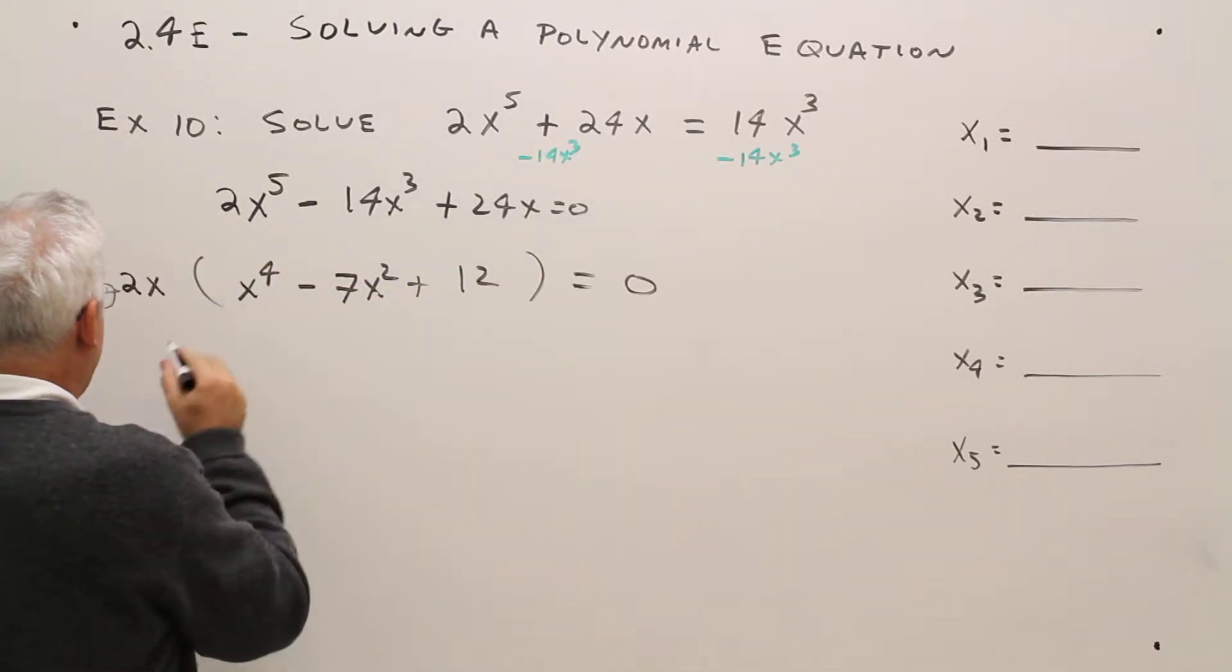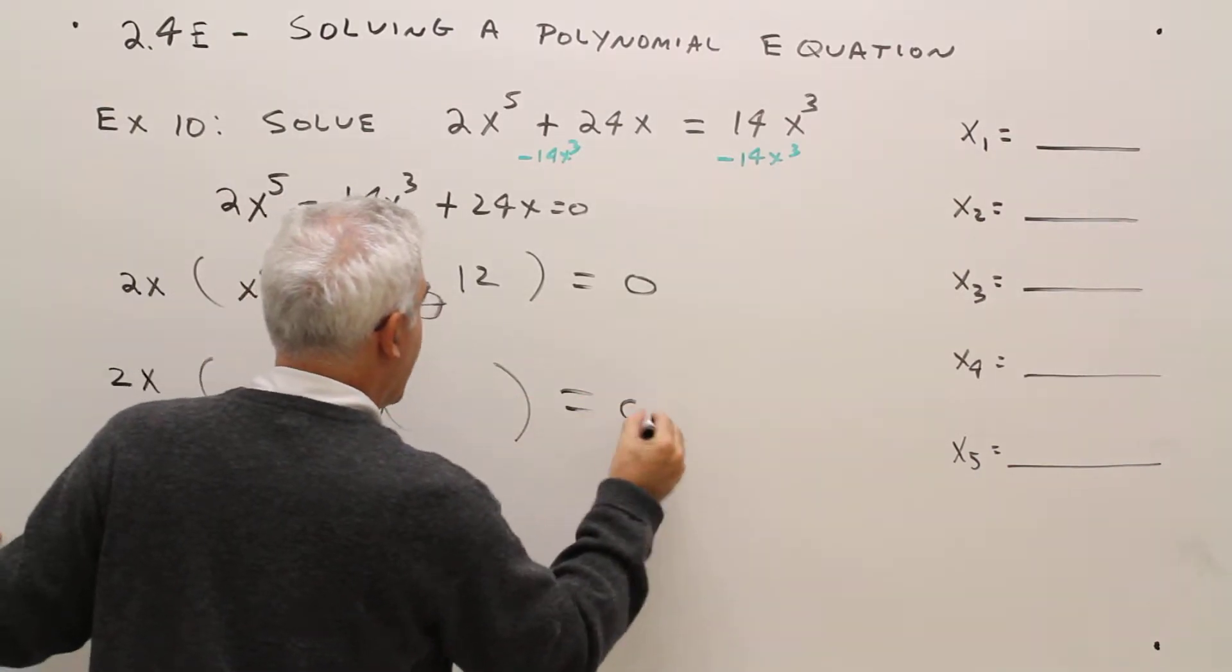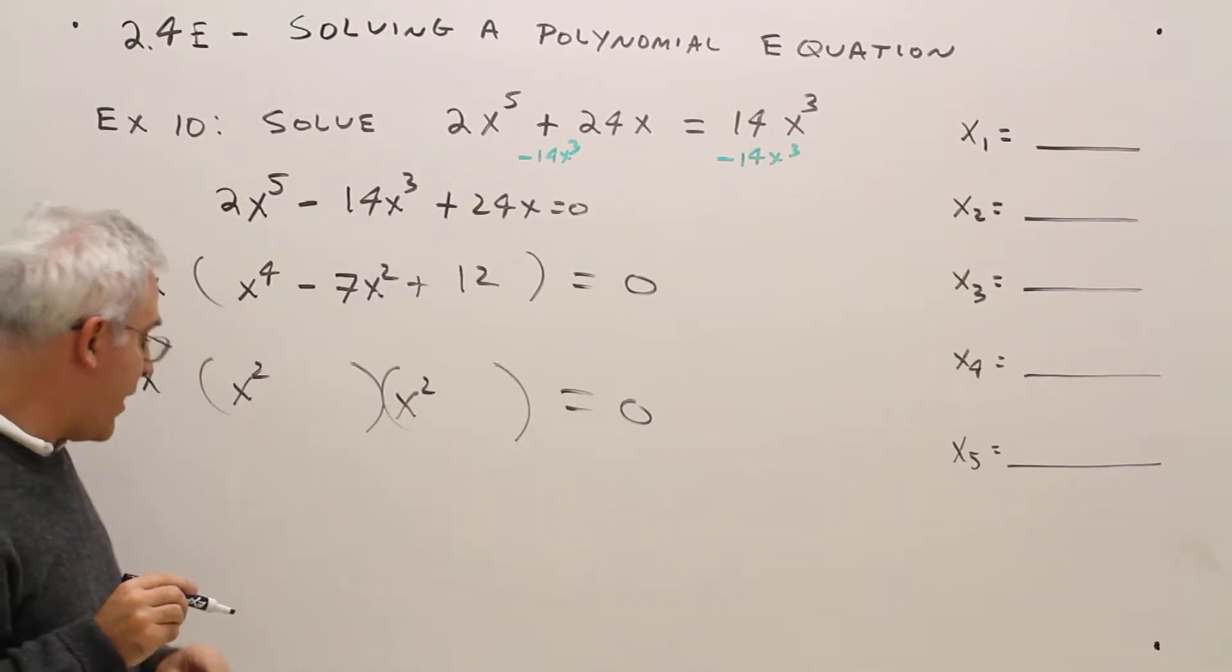So I'll set up my template. 2x, somebody, somebody equals zero. So x squared and x squared because x squared times x squared is x to the fourth.